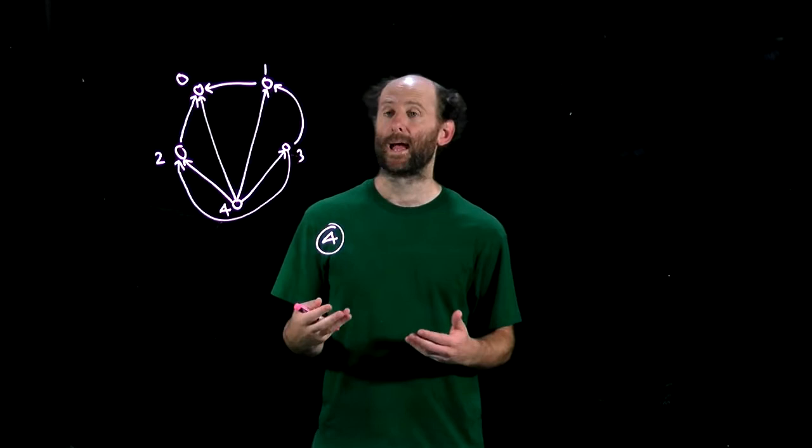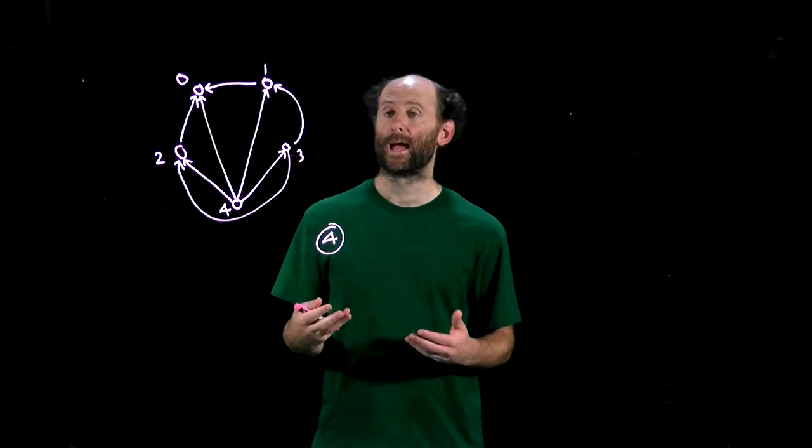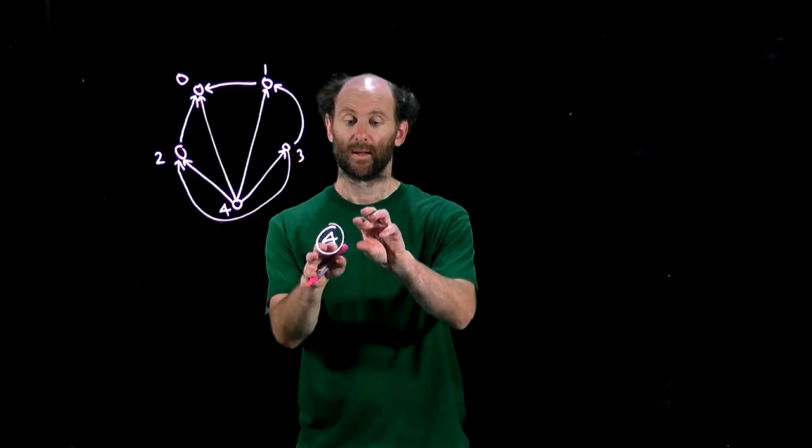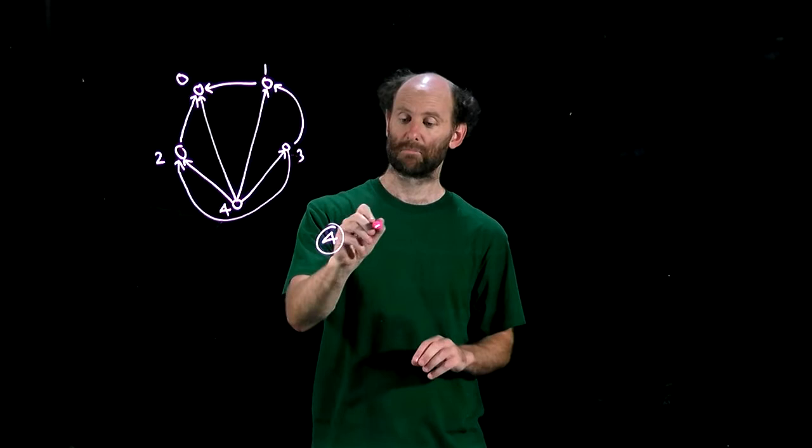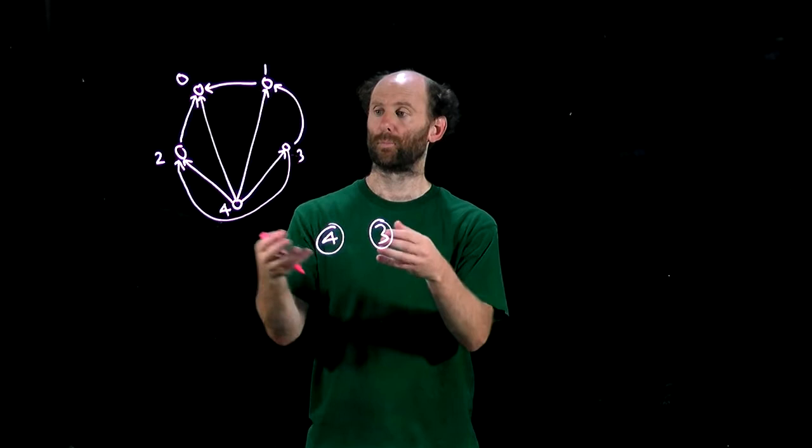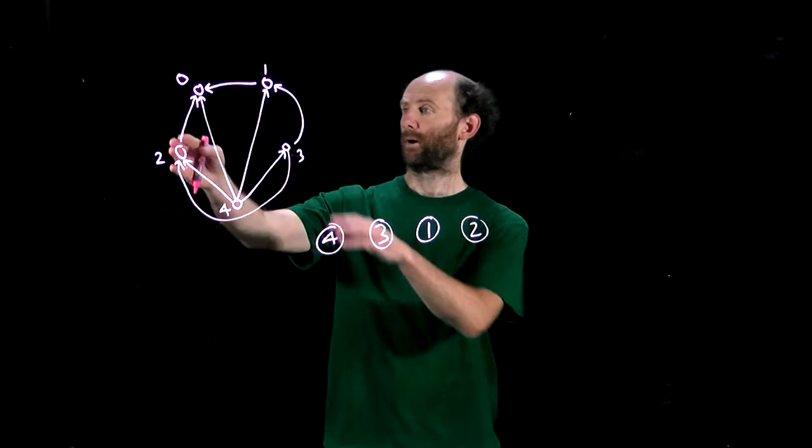Next we can only have a node where the only in-neighbor is four. Anything that comes after here can have only arcs coming in from four, so we've got a couple of candidates: two and three. Let's choose three. Now we can choose any node with three or four pointing into it, let's say one, then two, and finally zero.